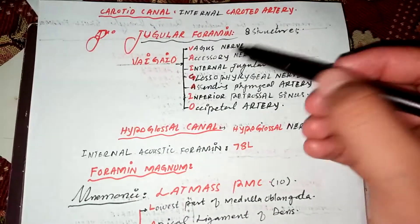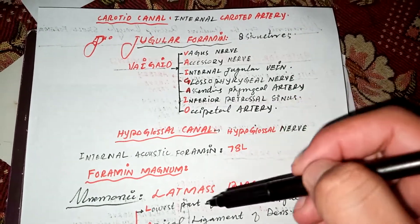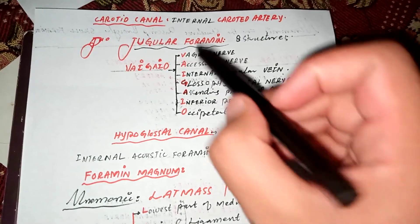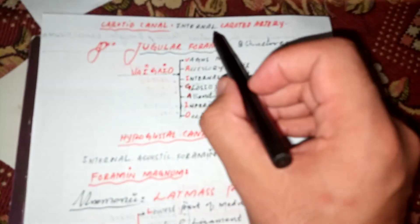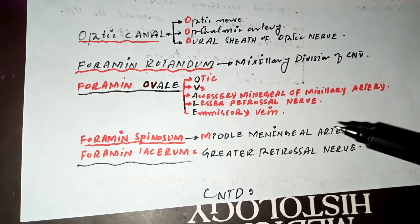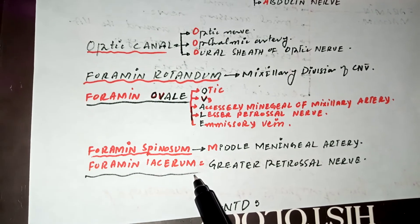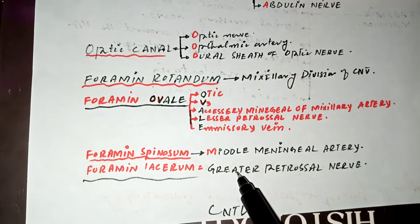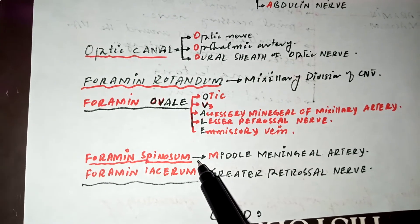Those are the foramina present in the posterior cranial fossa. The foramina present in the middle cranial fossa include the carotid canal — only the internal carotid artery passes through this canal. Another foramina is the foramen lacerum; the only structure passing through the foramen lacerum is the greater petrosal nerve.